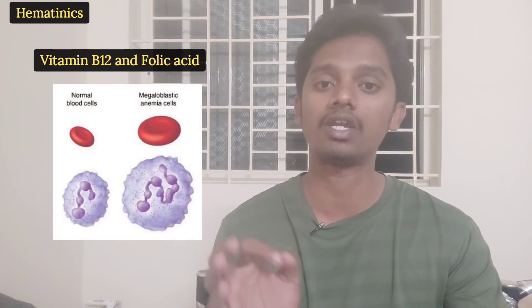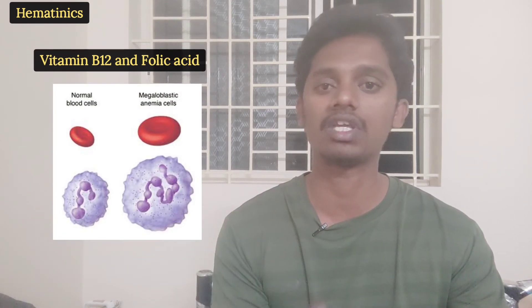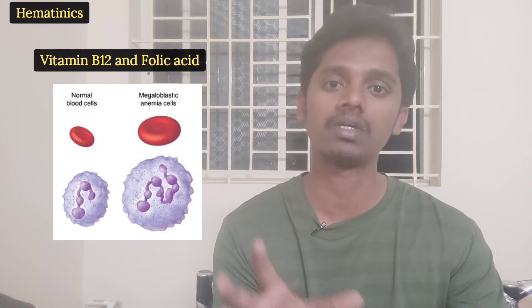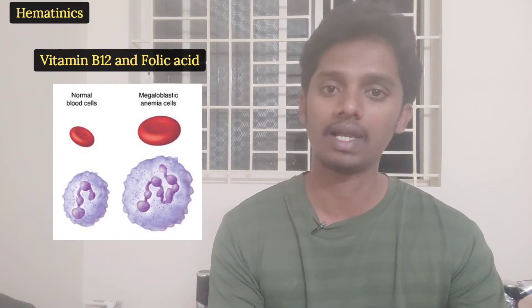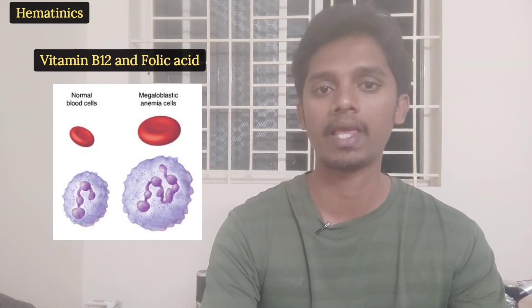The next two compounds are vitamin B12 and folic acid. Vitamin B12 has another name: cyanocobalamin. Both of these vitamins belong to the vitamin B complex group and are water-soluble. Vitamin B12 and folic acid are both necessary for DNA synthesis. When DNA synthesis is properly supported, RBC cells mature and reach blood circulation as non-nucleated cells full of hemoglobin.